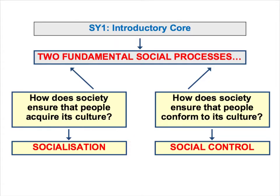What we're going to do in this screencast is continue developing our understanding of culture by looking at this key question: how does society ensure that people conform to its culture? In other words, how is social order maintained? And we're going to use this concept, social control, to describe this particular process. Both of these key ideas — socialisation and social control — are really important for the first section of the SY1 exam.